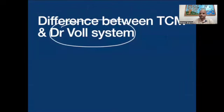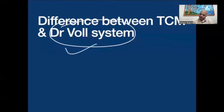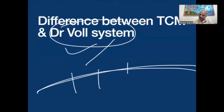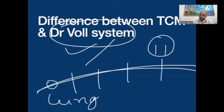Dr. Bohl is a system where there is no need to use any needle. We can do the whole treatment without using a single needle. And Dr. Bohl has given more meridians — the doctor has given many points in between the meridians. Suppose this is the lung meridian and in TCM there are 11 points; Dr. Bohl has given a few more points, so the number of Dr. Bohl points are a little more than the TCM.